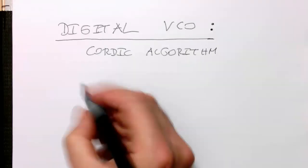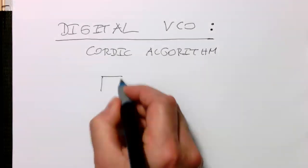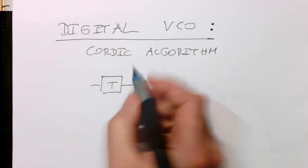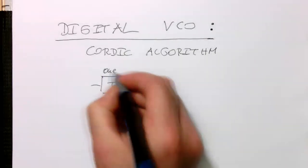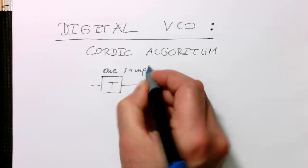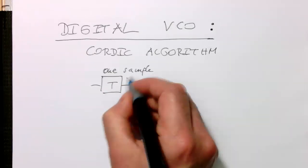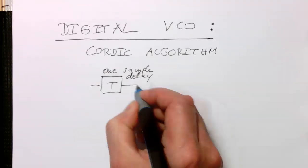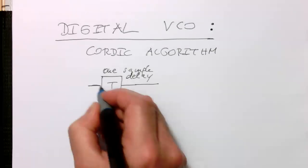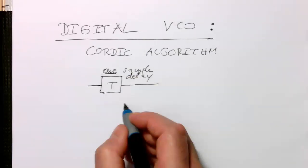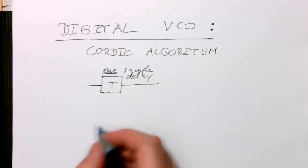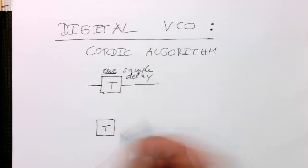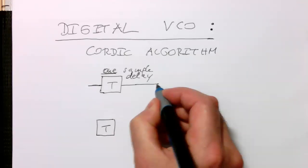The CORDIC algorithm has a very simple structure. So we have T as a delay unit. One sample delay, so not a simple time or something like this, just one sample delay. And we have another delay. Again, just one sample.